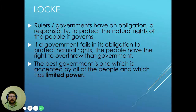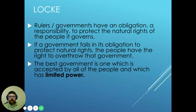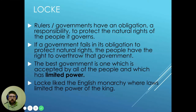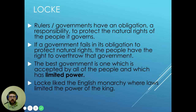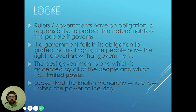The best government is one which is accepted by all the people and which has limited power. Hobbes believed a monarch should have absolute power, while Locke believed a ruler can be in place but cannot have all the power — it must be shared and limited. Locke was actually favorable of the English monarchy having a king, but he believed the king should not have all the power. He believed a limited monarchy is the best form of government.